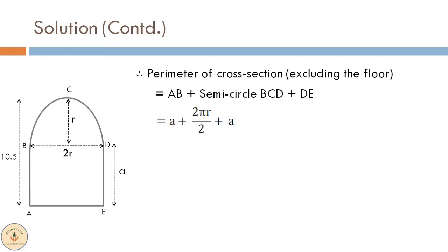Now substituting the value of a that we obtained, which was 7 meters, and the value of r that we obtained, which was 7 by 2 meters, we get that perimeter of the cross section is 25 meters.